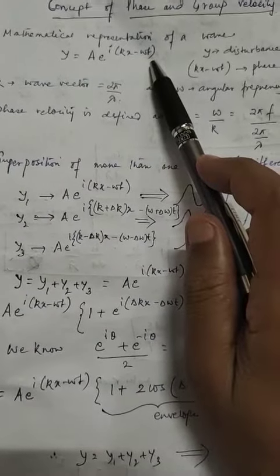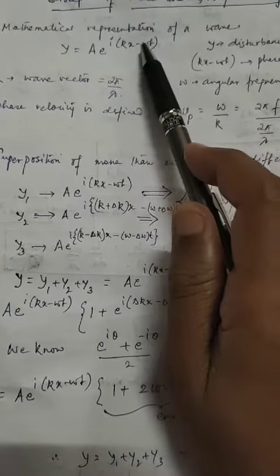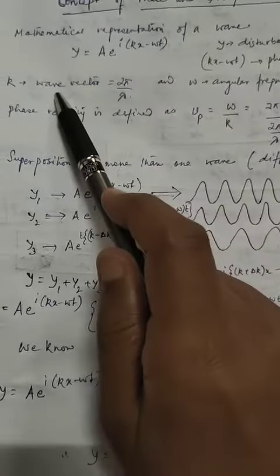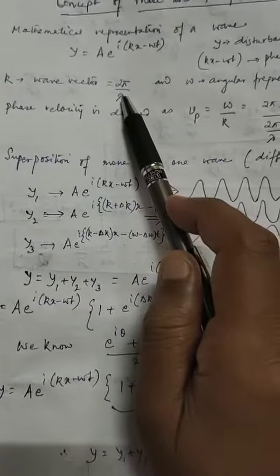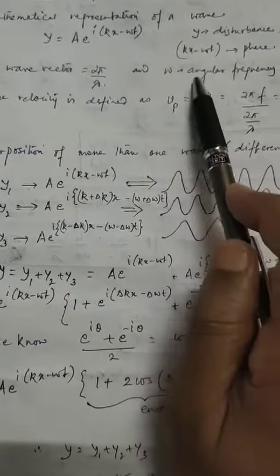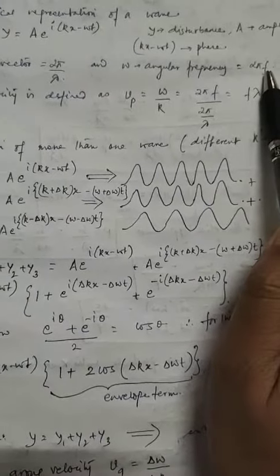A wave is a disturbance that travels through space and time. k is the wave vector, equal to 2π/λ, where λ is the wavelength. Omega is the angular frequency which equals 2π times the linear frequency.